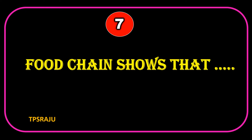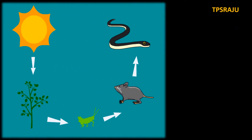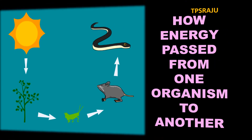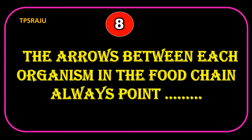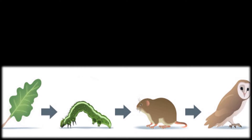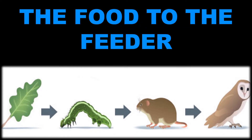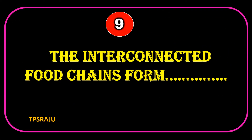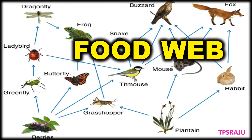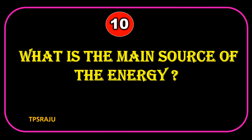A food chain shows how energy passes from one organism to another. The arrows between each organism in the food chain always point from the food to the feeder. The interconnected food chains form a food web.